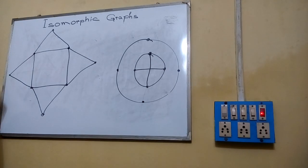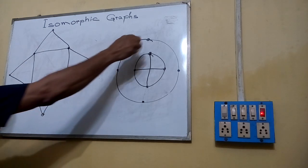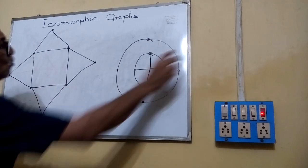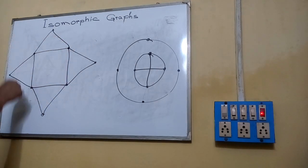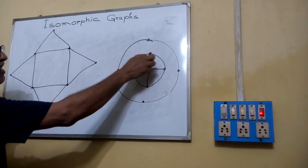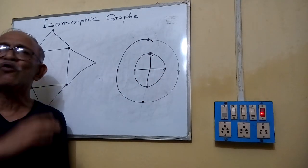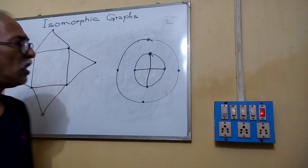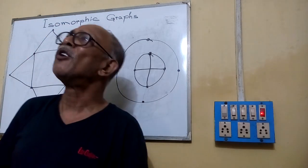Now check the degree of the vertices. In the first graph, some vertices have degree 2, 2, 2, 2, and others have degree 4, 4, 4, 4, 4. But in the second graph the corresponding vertices have degree 3, 3, 3, 3, 3. Since the degree sequences do not match, these two graphs are not isomorphic. In this way we decide when two graphs are isomorphic or not.